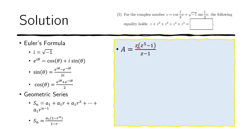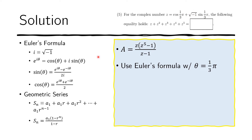Now we know what we're looking for, and we evaluate this expression by removing z using Euler's formula. Setting theta equal to one-third pi — since that's inside the cosine and sine — we see that z equals e to the i times one-third pi. We substitute this exponential form into our expression for A.